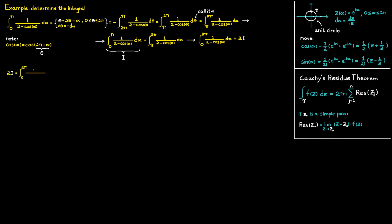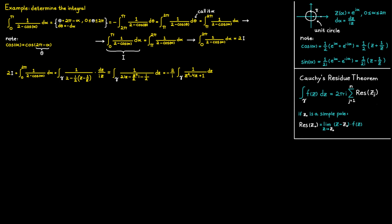Using the same unit circle parameterization and substitutions and inserting them into our integral, we get a new expression. After simplifications, the denominator has two zeros: one at two minus the square root of three, and another at two plus the square root of three. Using this, we rewrite the integrand in factored form. Only one of these two points — two minus the square root of three — is inside our contour gamma.